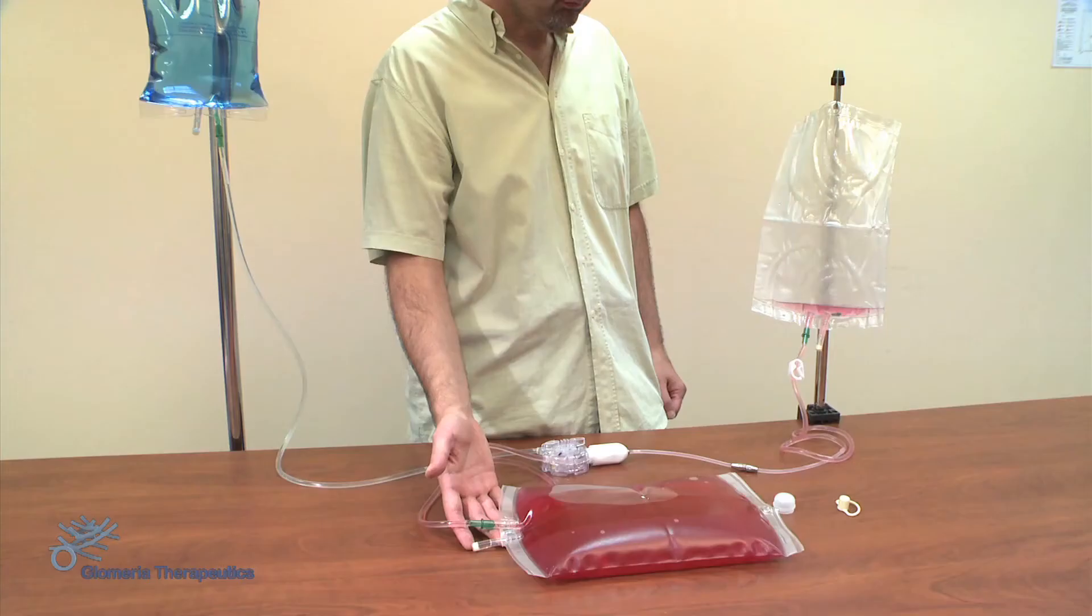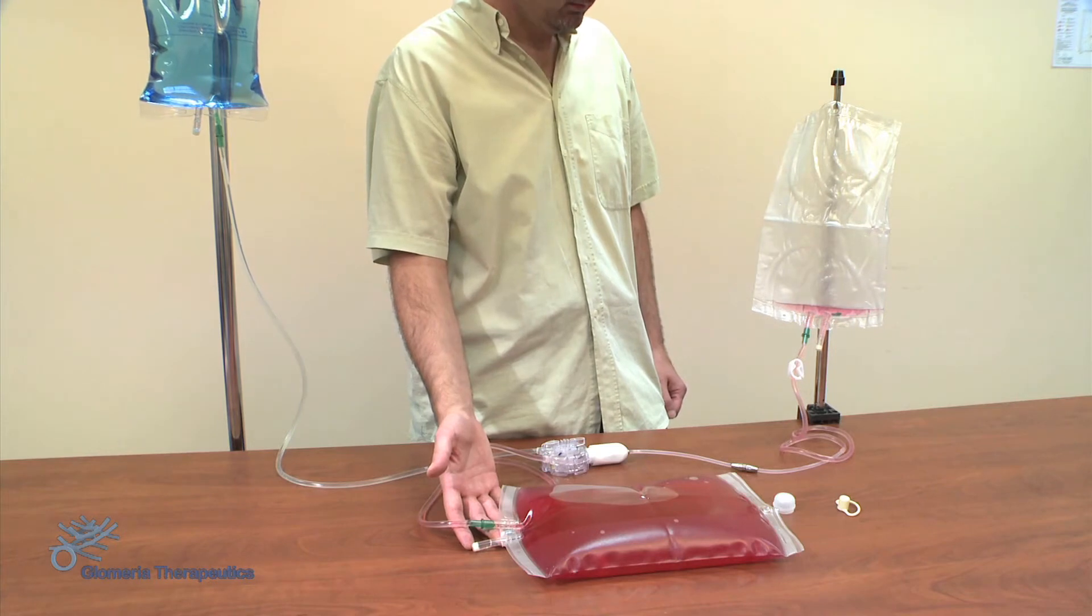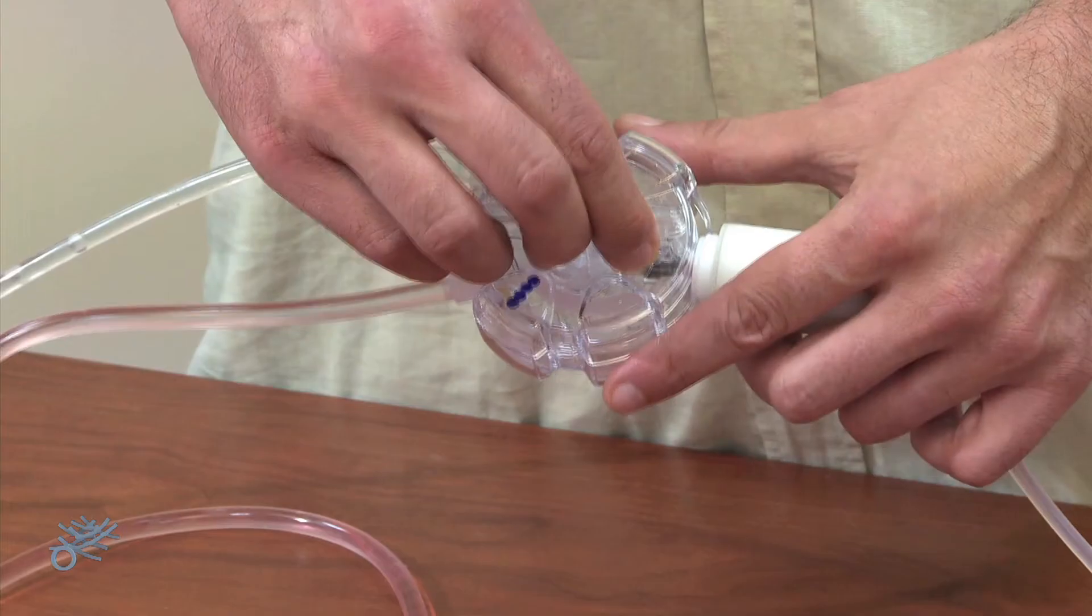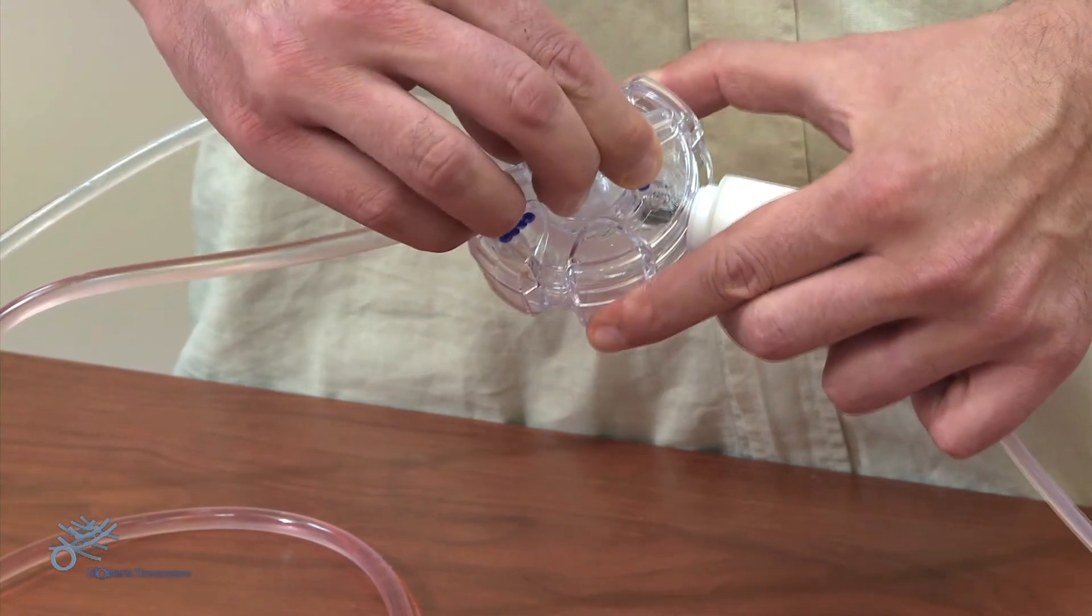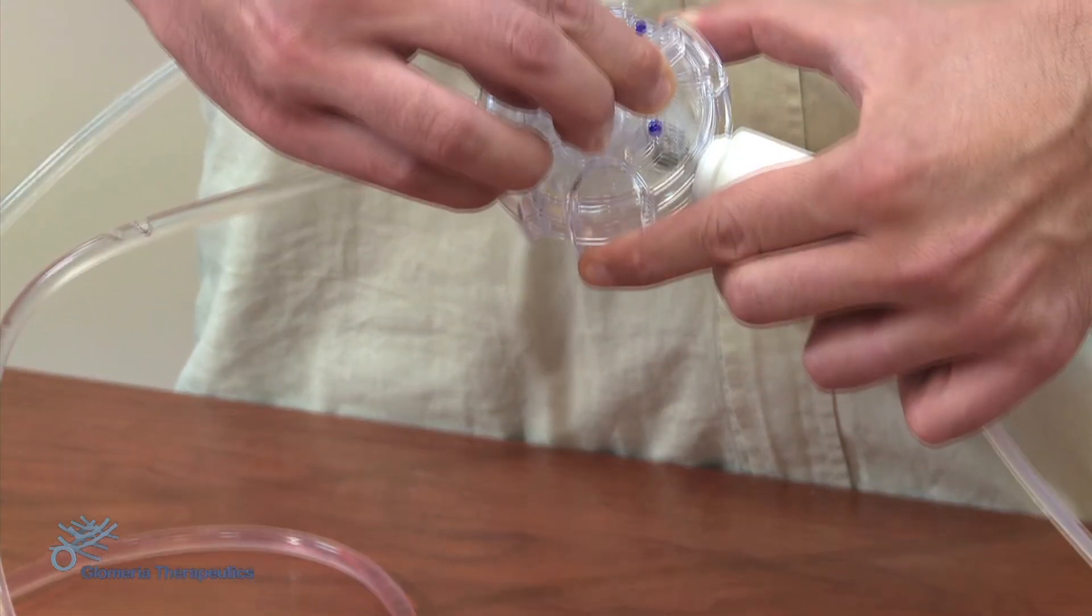When the liquid present in the peritoneum has filled the receptacle bag and the flow has ended, we turn the valve on the Desmo connector to the position denoted by three blue circles.